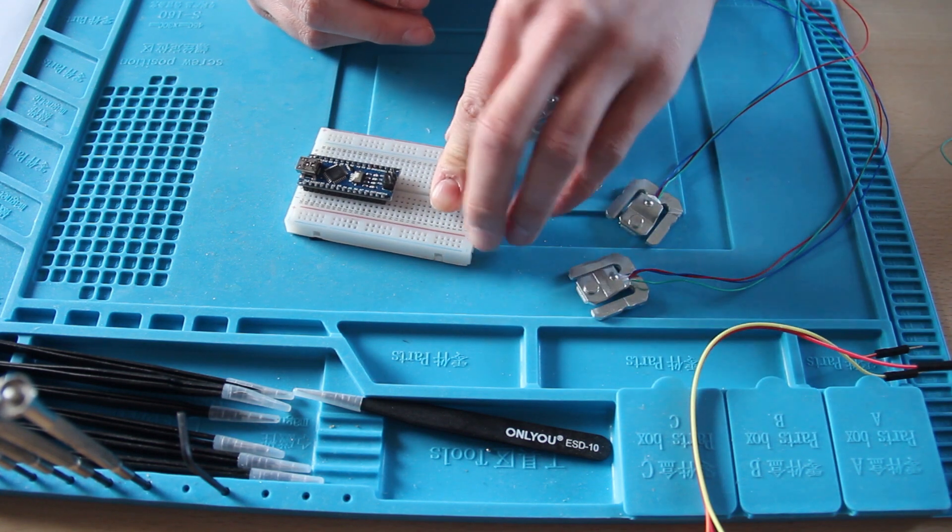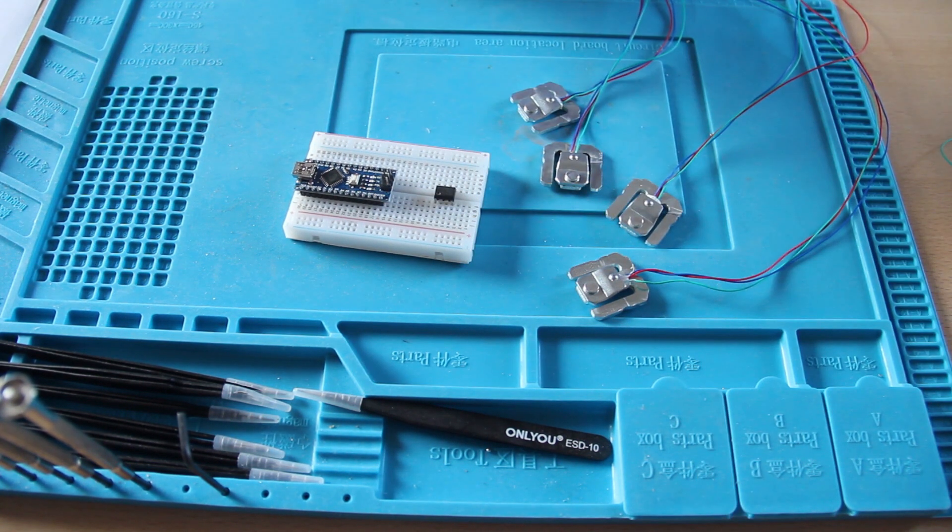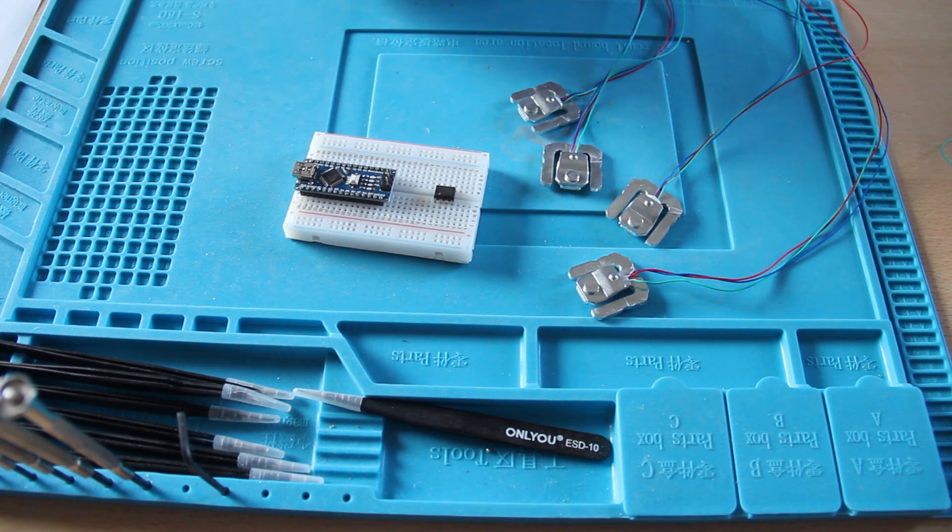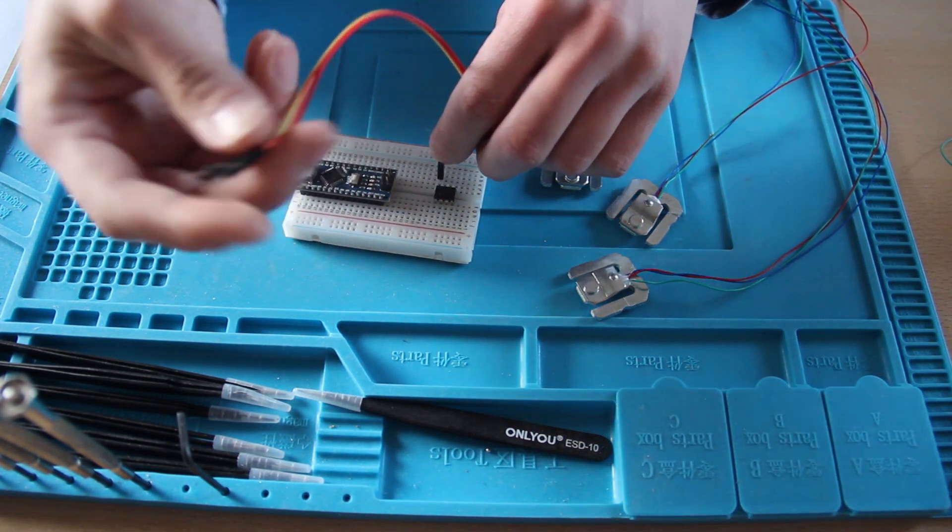I've got my oscilloscope within hand reach. Alright, so let's connect the power. VCC, that's the yellow one, connects to the plus rail over here.